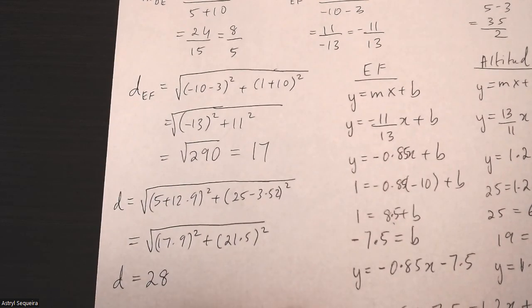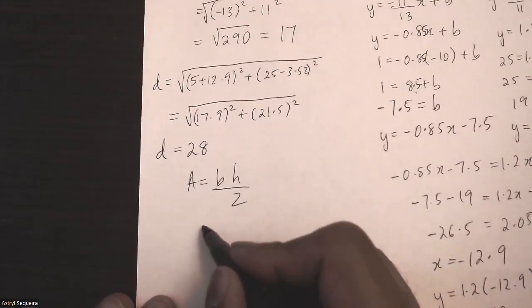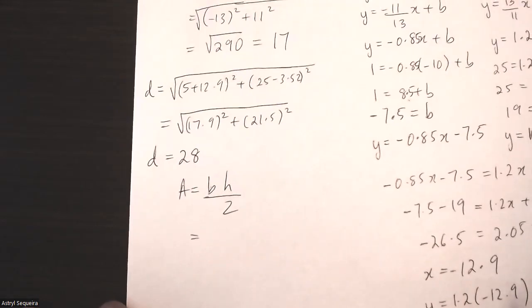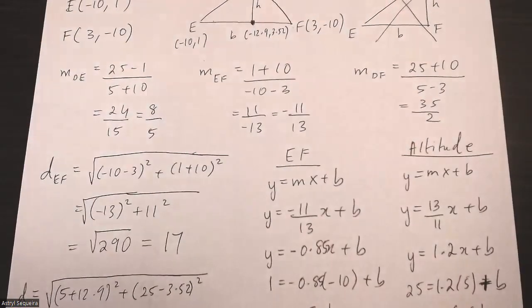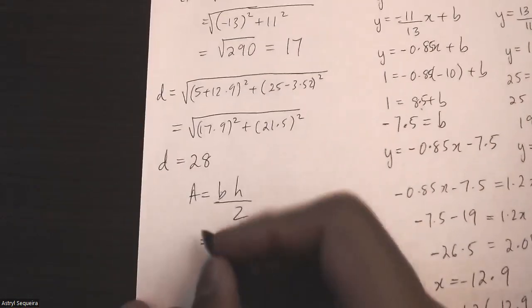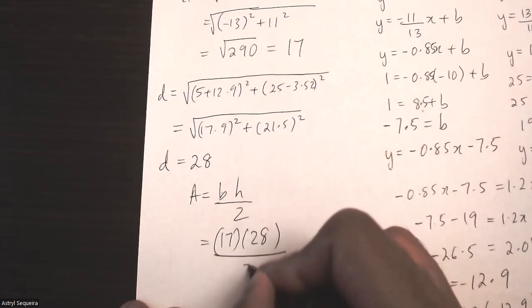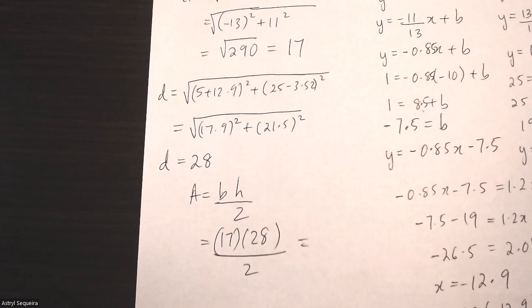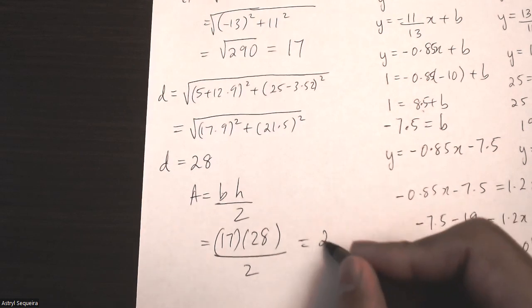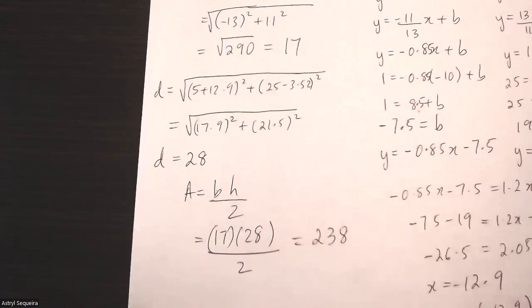Now I can find the area: area equals base times height divided by 2. The base is 17 (the distance of EF) and the height is 28, so area equals 17 times 28 divided by 2, giving an area of 238 square units.